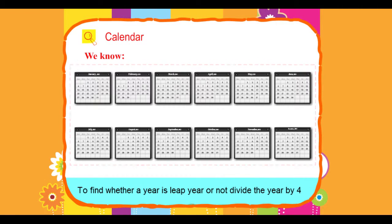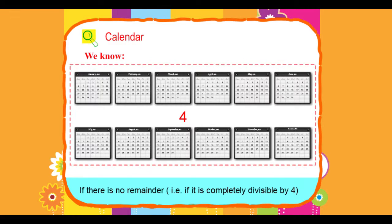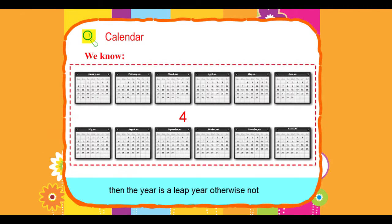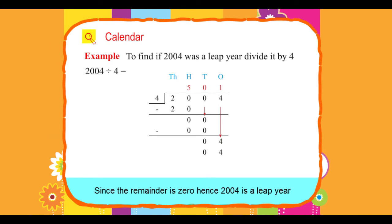To find whether a year is a leap year or not, divide the year by 4. If there is no remainder, that is, if it is completely divisible by 4, then the year is a leap year, otherwise not. For example, to find if 2004 was a leap year, divide it by 4. Since the remainder is 0, hence 2004 is a leap year.